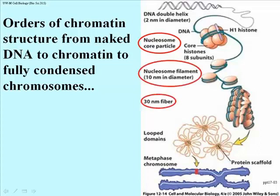The 10 nanometer filament coils up to form a 30 nanometer fiber. The 30 nanometer fiber in turn coils again to form looped domains, which are actually loops of DNA protruding from a protein-rich scaffold in the center. I'll have a photograph to show you what that is.